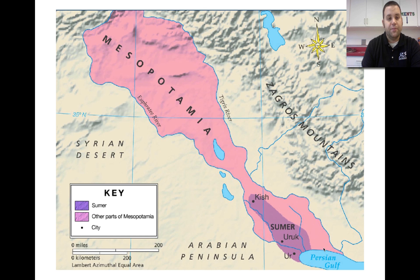So here's a picture of it — again, kind of what we're talking about. There's the Tigris and here's the Euphrates rivers. So when we talk about the Fertile Crescent and Mesopotamia, we're talking about this area in here.